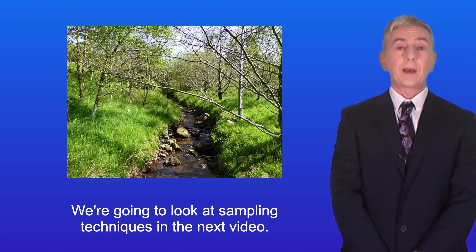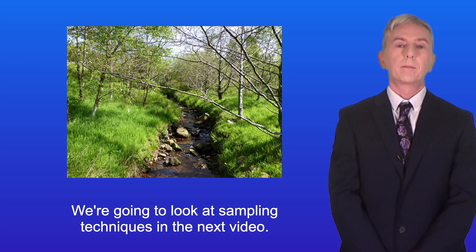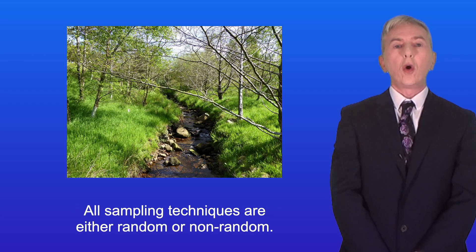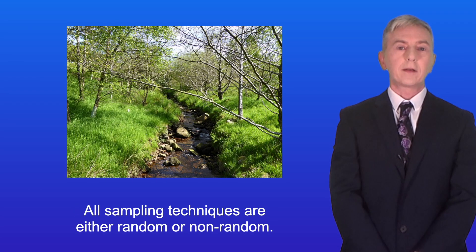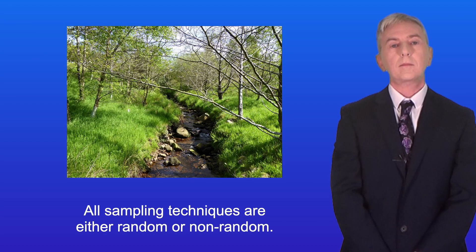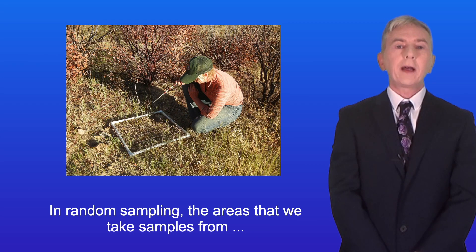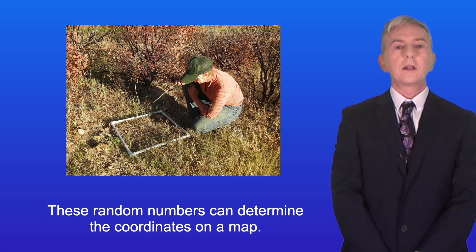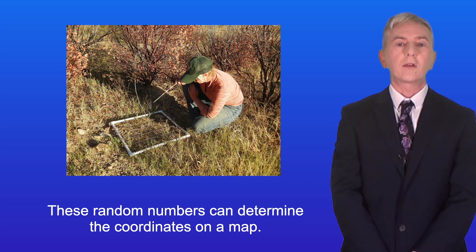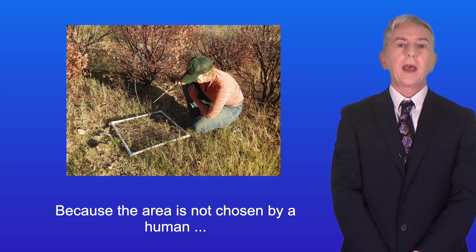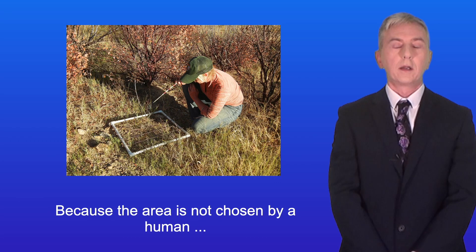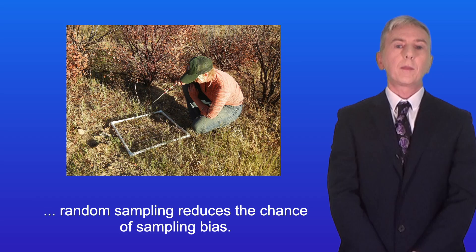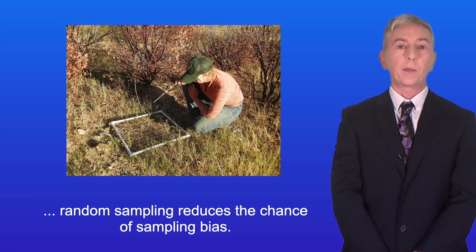We're going to look at sampling techniques in the next video. All sampling techniques are either random or non-random. In random sampling, the areas that we take samples from are selected by using random numbers. These random numbers can determine the coordinates on a map. Because the area is not chosen by a human, random sampling reduces the chance of sampling bias.